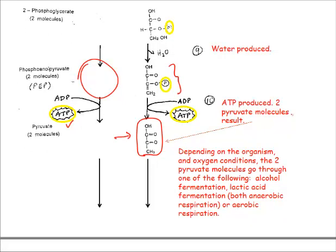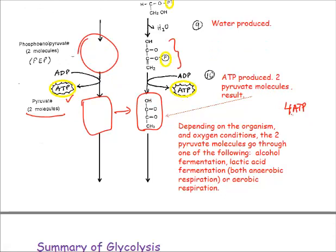The final product of this process is pyruvate — that three-carbon molecule — and there are two pyruvate molecules being formed. Four ATPs have been produced as a result of this process. Depending on the organism and oxygen conditions, the two pyruvate molecules go through one of the following: alcohol fermentation, lactic acid fermentation, or aerobic respiration. Let's summarize this and then take a look at the possible fates of pyruvate.